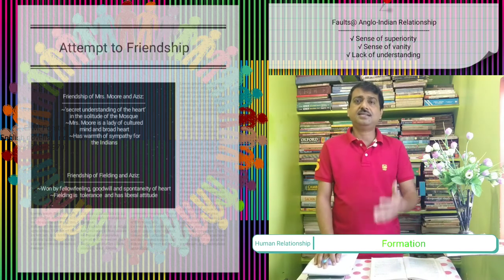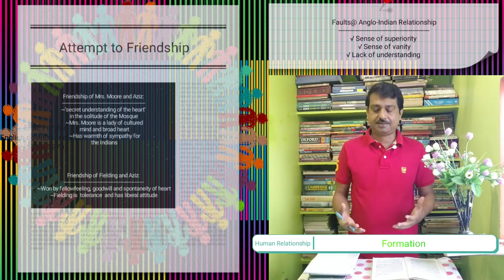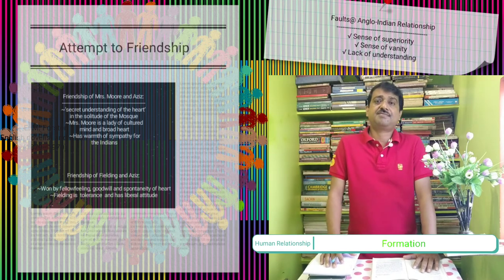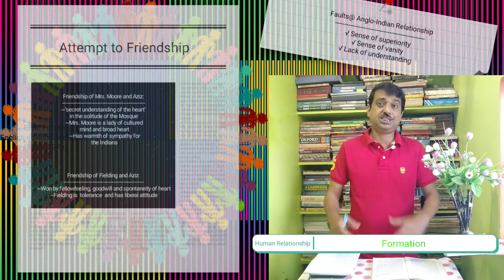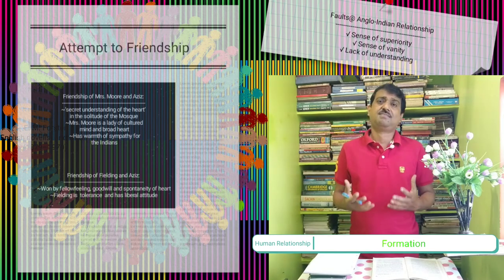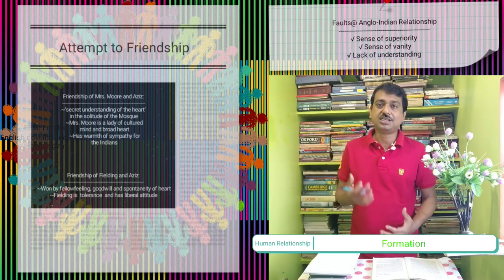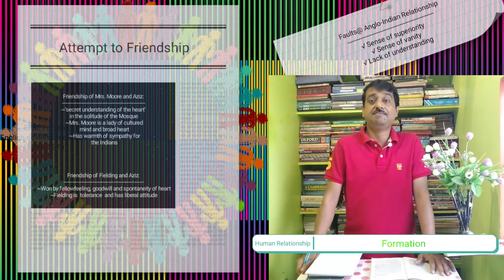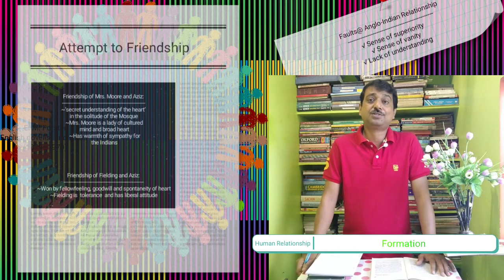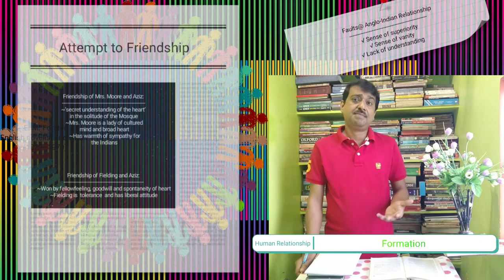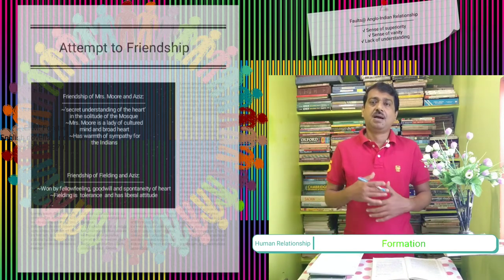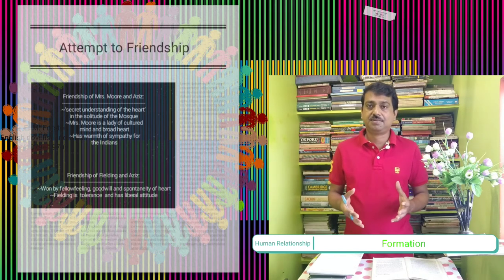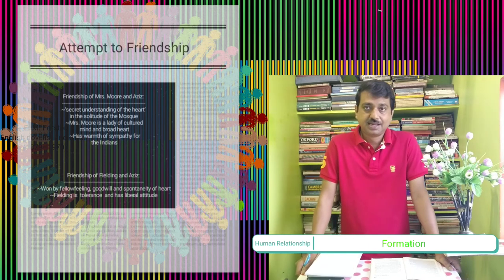Similarly, Fielding and Aziz are found to dispel the gloom of racial disparity. They are actuated by good feelings, goodwill, and spontaneity of heart. Fielding has a genial personality and possesses tolerance and a liberal attitude. Aziz, in perfect affinity with Fielding, is highly sensitive and impulsive by nature. They have had minor differences on many matters of common interest, but these insignificant differences are dissolved by their reciprocal understanding and friendship — and that is a focal point in A Passage to India.